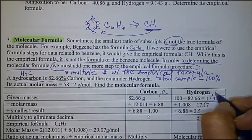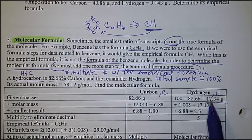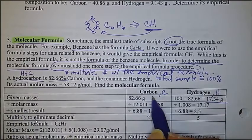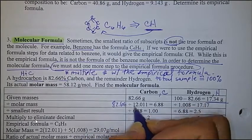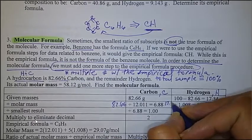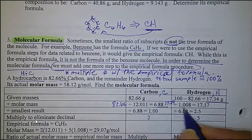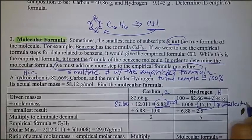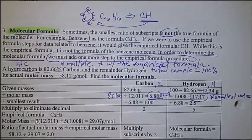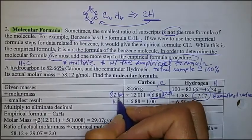We want to calculate carbon and hydrogen. After we figure out how much of each we have, we divide by the molar mass of each element. So divide 82.66 by the atomic mass of carbon, 12.01. Then divide 17.34 by 1.008 for hydrogen. You get certain numbers, then you divide by whichever is the smallest number. In this case the smallest value is 6.88, so 6.88 divided by 6.88 gives you 1.